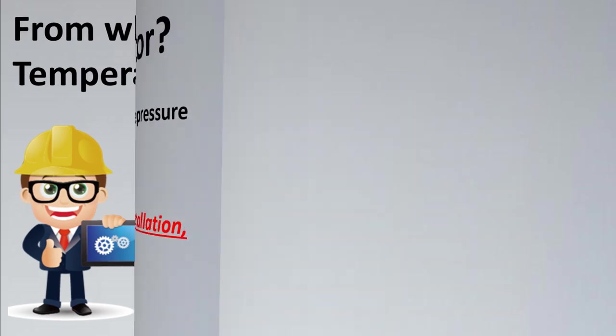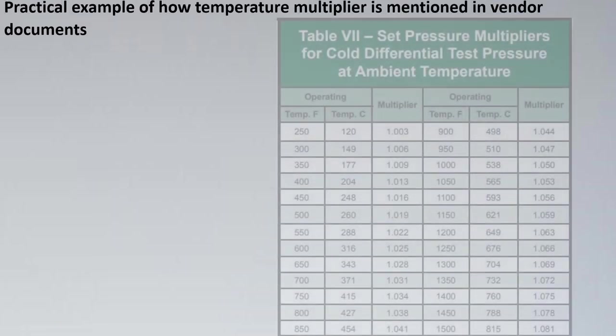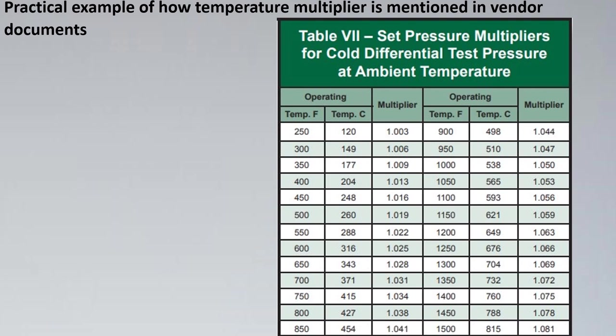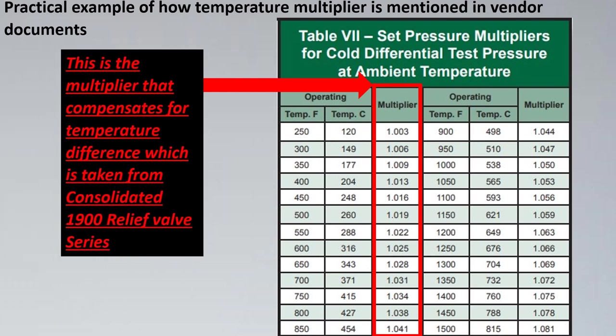Here is an example of a relief valve from Baker Hughes, a well-renowned company in relief valves. This is a typical temperature compensation table showing the set pressure multiplier for cold differential test pressure at ambient temperature. For example, at 120 degrees Celsius, the multiplier to the set pressure would be set pressure multiplied by 1.003. The multiplier keeps increasing as temperature increases — at 450 degrees Celsius, the multiplier is 1.041. This is how we get the multiplying factor for our relief valve calculation.